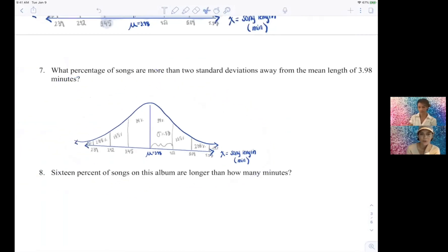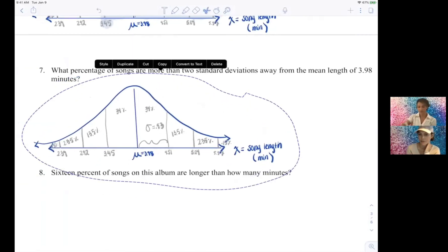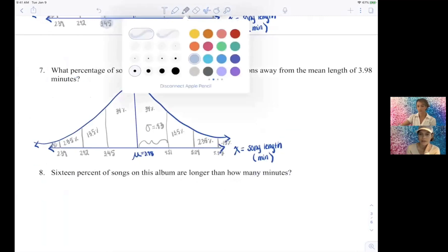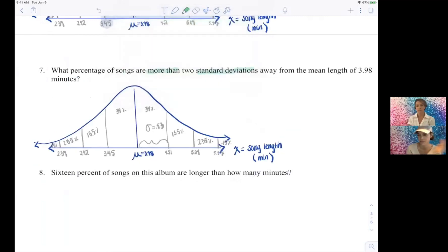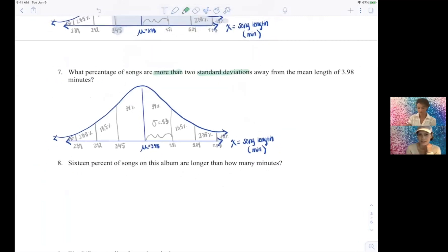All right, what percentage of songs are more than two standard deviations away from the mean length of 3.98 minutes? So we go two standard deviations, so like this, okay, one, two standard deviations.